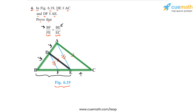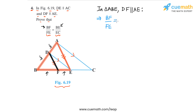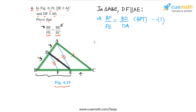Let's write out the solution properly. In triangle ABE, DF is parallel to AE, and this means that BF by FE is equal to BD by DA, by the Basic Proportionality Theorem. Let's call this equation one.